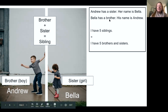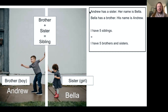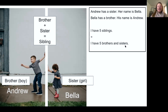Let's take a look at these sentences: Andrew has a sister — her name is Bella. Bella has a brother — his name is Andrew. I have five siblings, which is the same as saying I have five brothers and sisters.